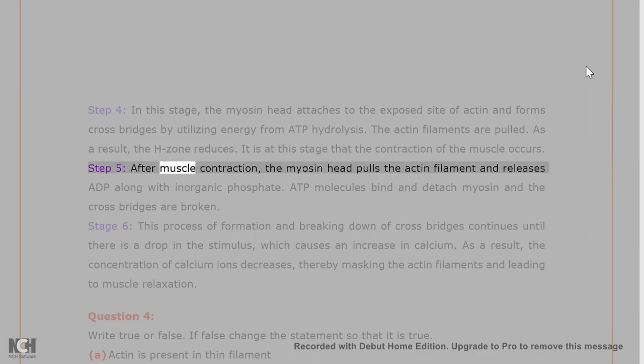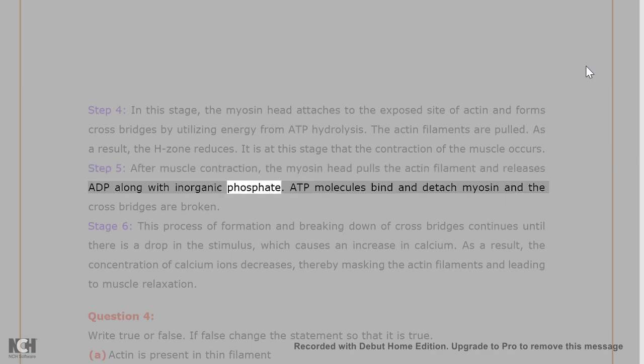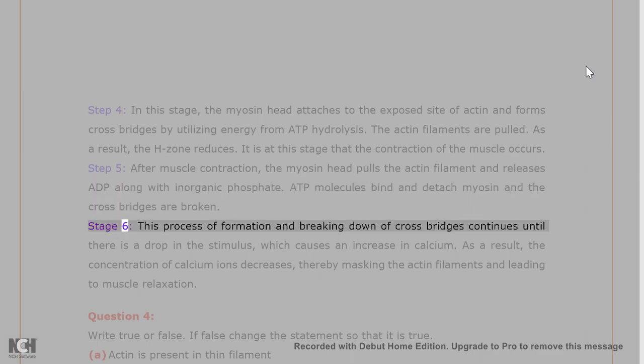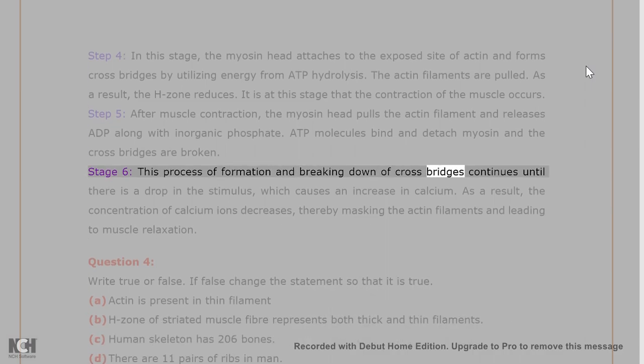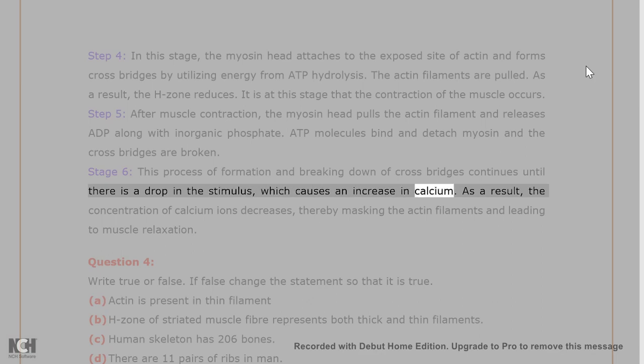Step 5. After muscle contraction, the myosin head pulls the actin filament and releases ADP along with inorganic phosphate. ADP molecules bind and detach myosin and the cross bridges are broken. Step 6. This process of formation and breaking down of cross bridges continues until there is a drop in the stimulus, which causes an increase in calcium. As a result, the concentration of calcium ions decreases, thereby masking the actin filaments and leading to muscle relaxation.